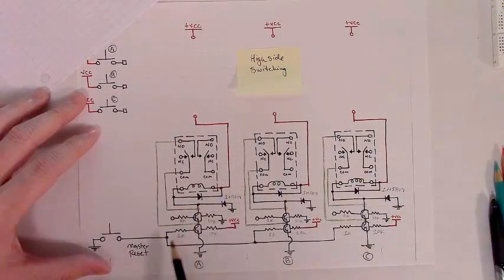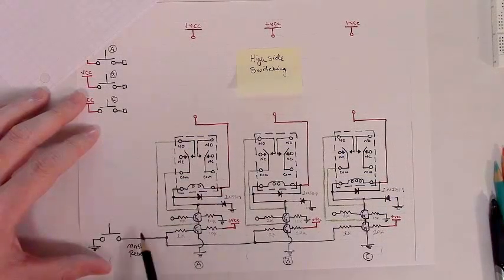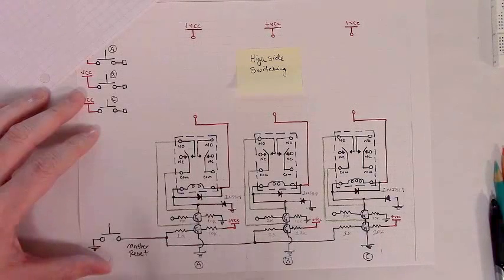Goes from one, branches once, branches twice, branches a third time. There's the master reset line at the bottom of the page.